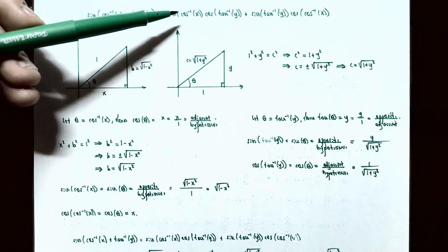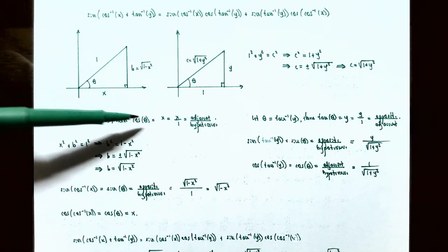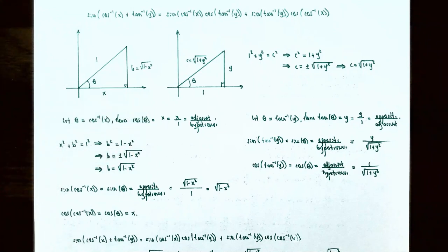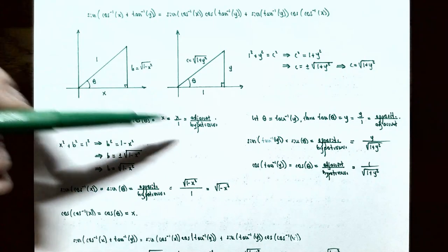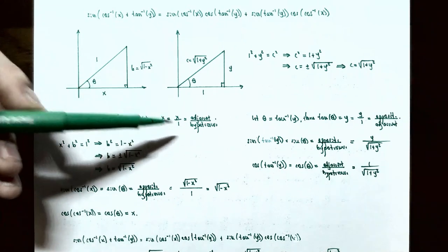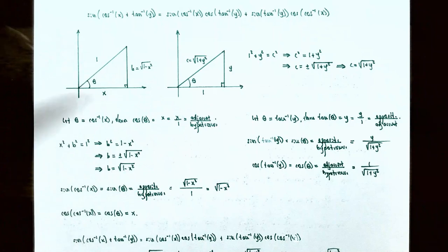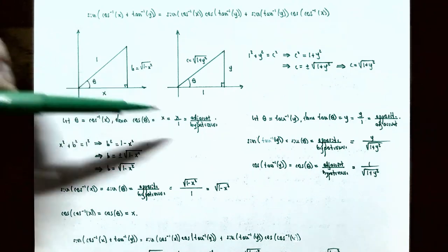We'll call inverse cosine of x equal to theta, so cosine of theta equals x — that's the definition of the inverse cosine. We can write x as x over one. From right triangle trigonometry, cosine of theta is adjacent over hypotenuse, so the adjacent side is x and the hypotenuse is one. We draw a reference triangle in quadrant one where theta is the angle, adjacent side equals x, and hypotenuse equals one.